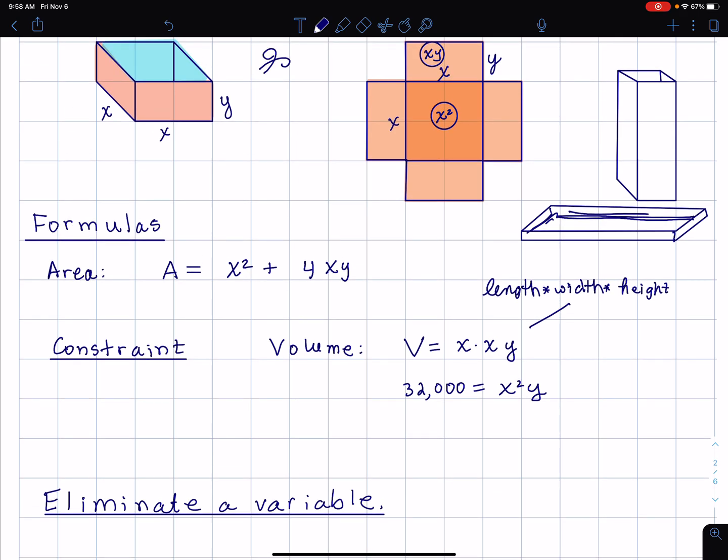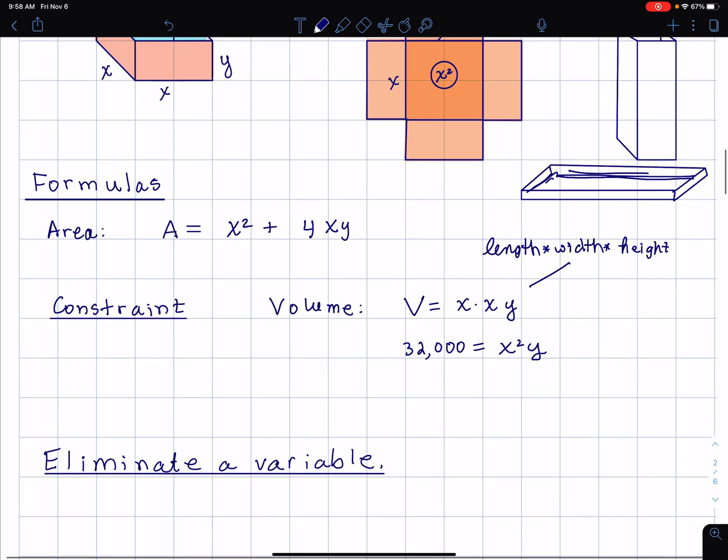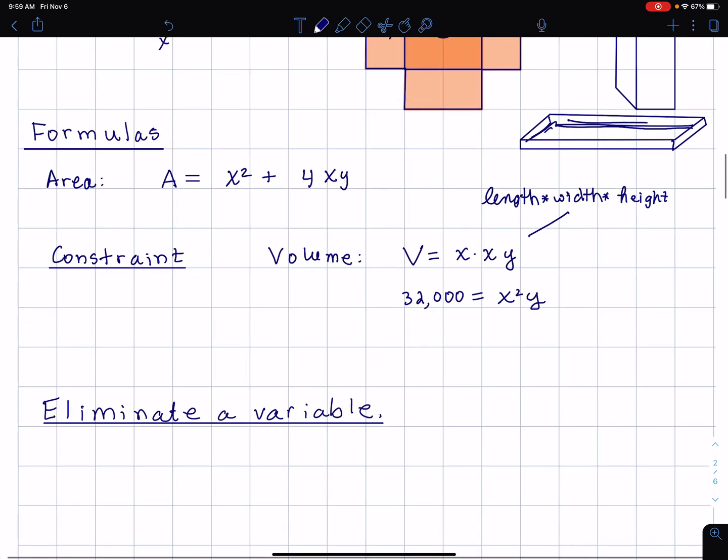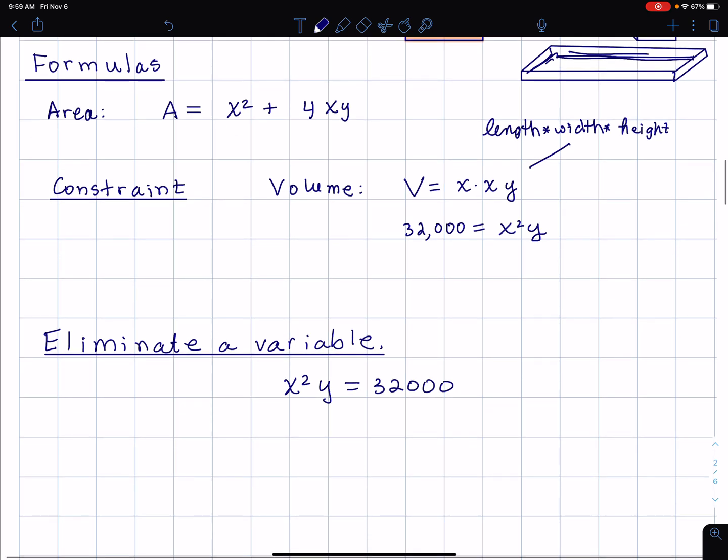What we do is eliminate one of the variables. We're trying to find x and y to make a minimum. Why don't I just make x and y zero to make a minimum? Well, there's a constraint that x squared times y equals 32,000. I'm going to eliminate a variable by solving for one of the variables. So I'm going to solve for y.